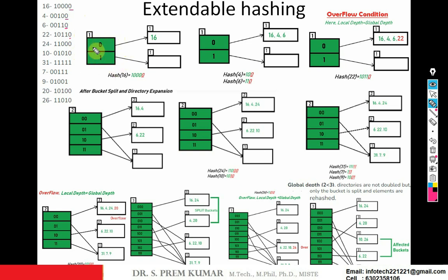I am taking a directory — this green color structure I am calling a directory, and these structures I am calling buckets, which are nothing but memory locations. The bucket size is three, meaning in each memory location you can accommodate three values. If there are more than three values, we say it is an overflow. I am starting with one bit — this is called the global depth. With one bit representation: 0 and 1. The global depth I am taking as one.